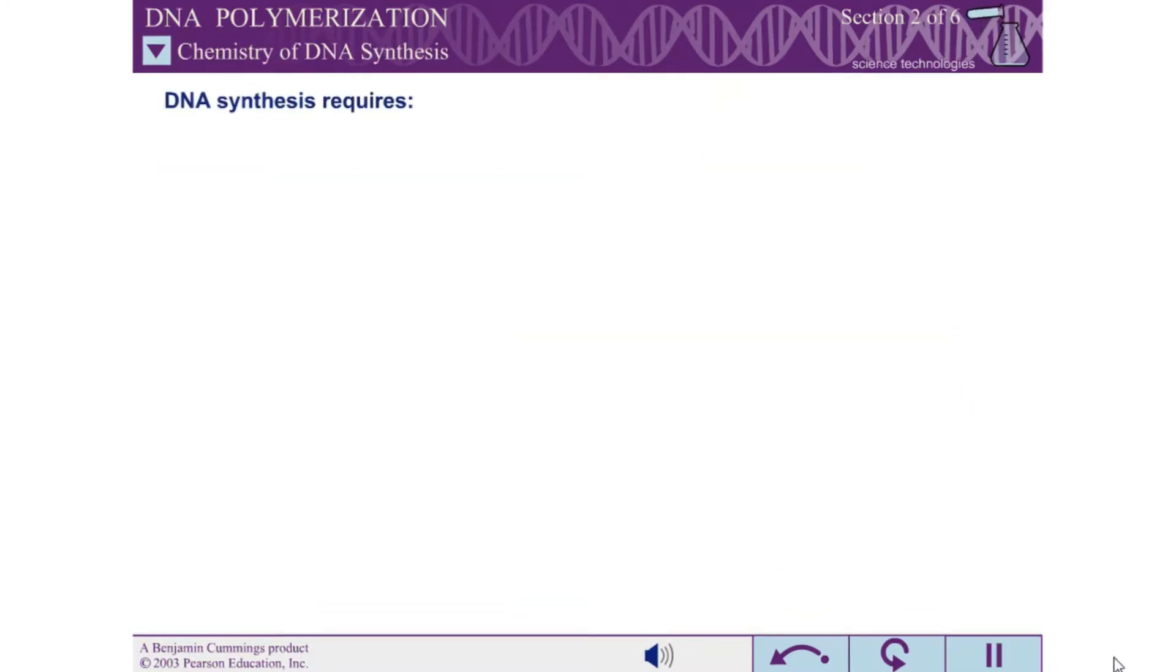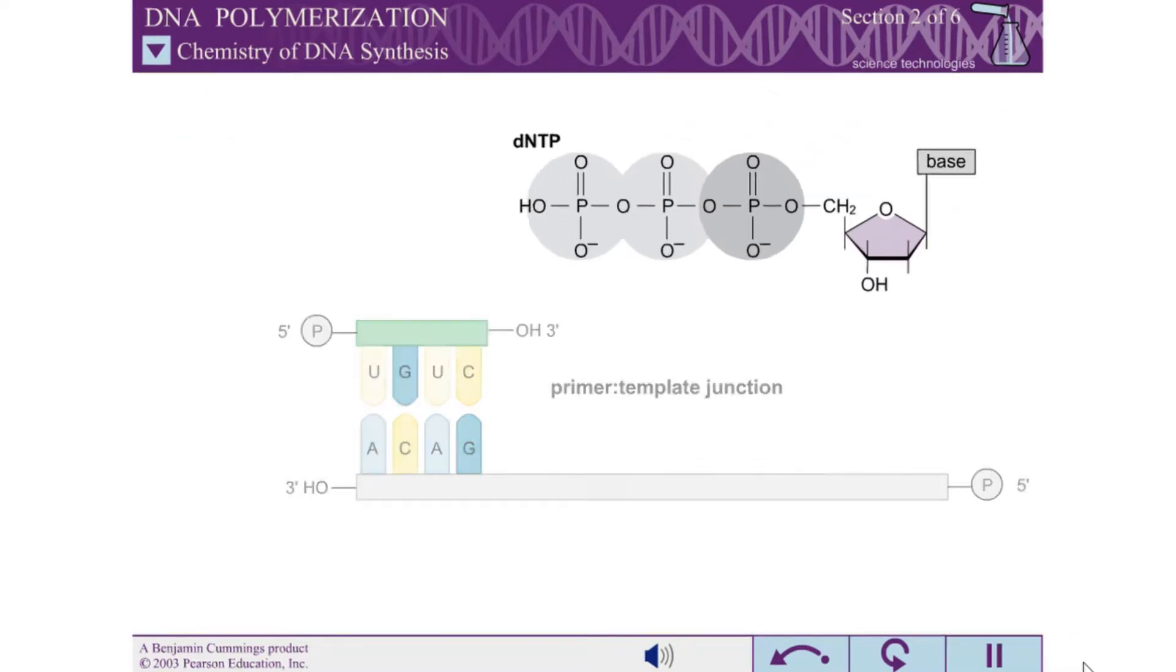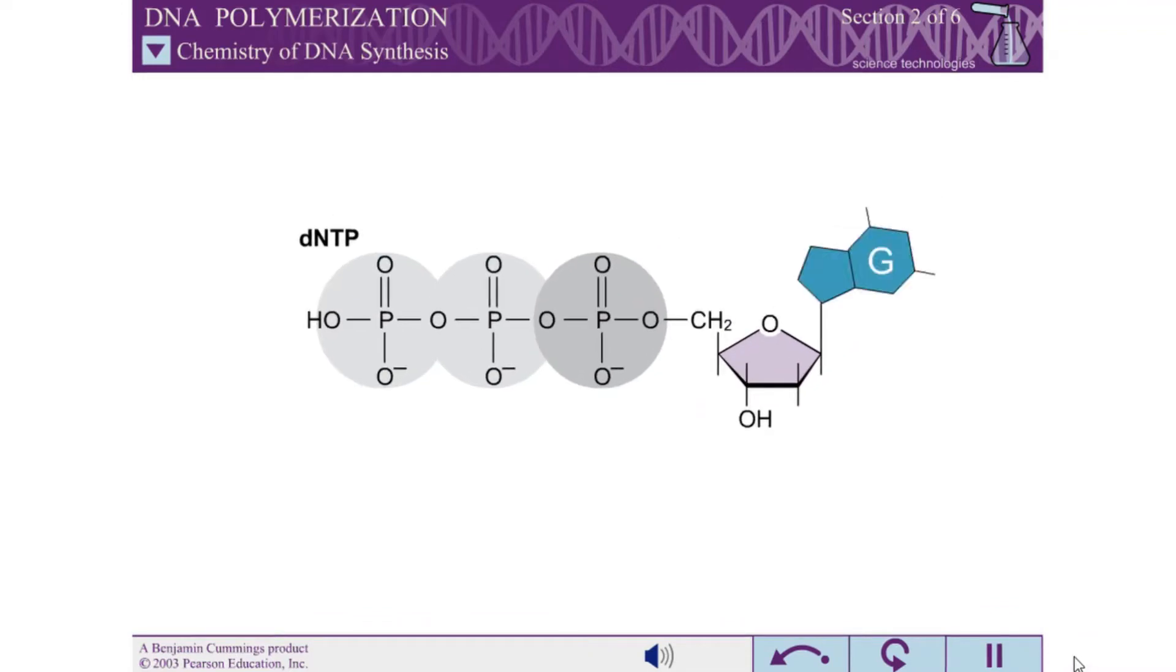DNA synthesis requires deoxynucleoside triphosphates and a primer template junction. Each of the four DNTPs: dGTP, dCTP, dATP, and dTTP.